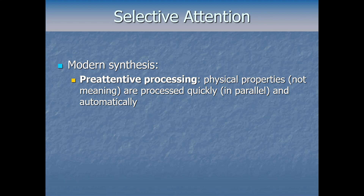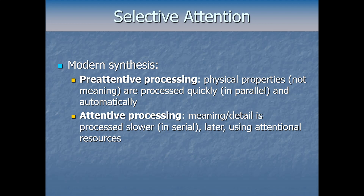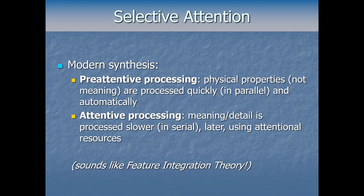Nowadays, the modern synthesis is more complex than a simple attenuator, but the basic idea still fits. In general, there's some pre-attentive or unconscious processing where physical properties get processed quickly, in parallel, and automatically — but usually not meaning. Then separately, there's attentive processing where meaning and detail get processed more slowly, in serial, at a later stage further into the brain, requiring limited attentional resources. This sounds a lot like the heart of feature integration theory, where pre-attentive parallel processing handled simple low-level stuff behind the scenes, and later deeper processing required limited attentional resources — slower, and we can only do so much at once. So it all fits together.